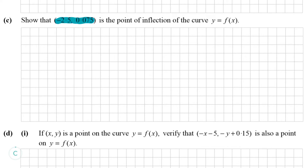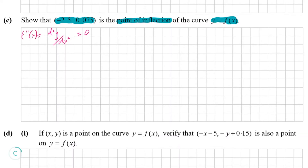Part C wants us to show that (-2.5, 0.075) is the point of inflection of the curve y equals f(x). The point of inflection is the point at which the rate of change of the slope is equal to zero — mathematically, where the second derivative d²y/dx² equals zero, or f''(x) equals zero.